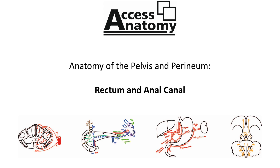In the male, the peritoneum from the middle third of the rectum is reflected onto the bladder, creating the rectovesical pouch. In the female, it is reflected onto the uterus, creating the uterorectal pouch, or the pouch of Douglas.